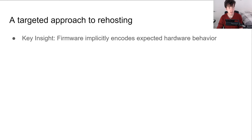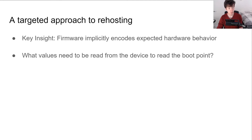Our key insight is that the firmware implicitly encodes the expected hardware behavior of the system. When the firmware reads data from a device, it will perform checks on the values it receives. If it receives erroneous data, it could trigger a system reset, hang in an infinite loop, or it may have to read again from the device. The expected hardware behavior is then encoded in what behavior is needed to make progress within the firmware — specifically, progress towards some particular point within the firmware that denotes that the firmware has sufficiently booted.